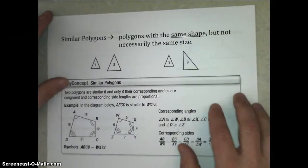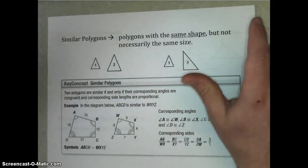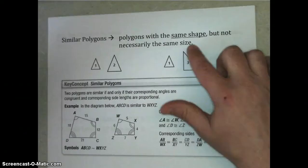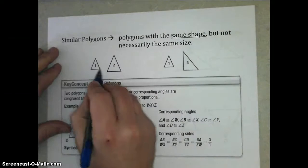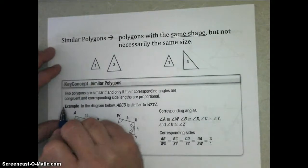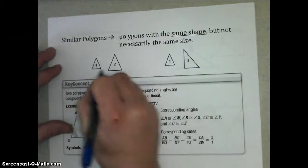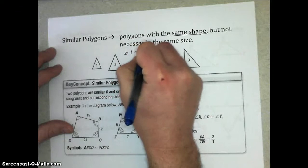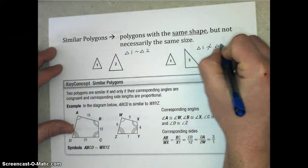So in the past, in Lesson 7-1, we used proportions to solve problems. Well, now we're going to use those proportions to identify similar polygons, and we're going to solve problems using properties of similar polygons. Here's what I want us to recognize: our definition of similar polygons are polygons with the same shape, but not necessarily the same size. Congruent polygons have the same size and shape, but similar polygons are going to have the same shape, but not always the same size. Most of the time, in fact, they won't have the same size. So in this case, we could say triangle 1 is similar to triangle 2. Triangle 1 is not similar to triangle 3. They have different shapes.